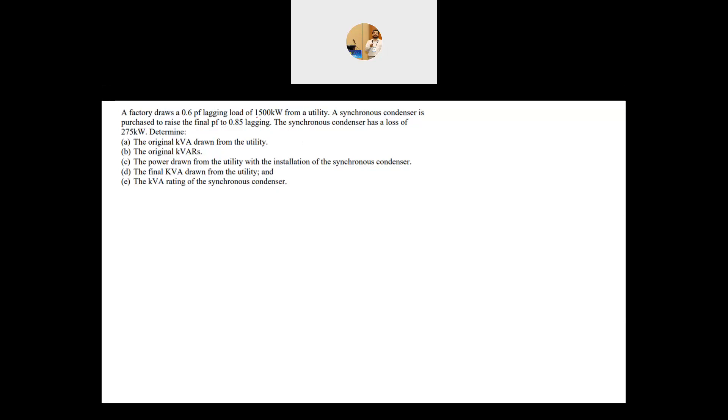So here we have a factory that draws 0.6 power factor lagging load of 1500 kilowatt from utility. So this is a three-phase system here and we have here the factory. This factory is basically using 1500 kilowatt and the power factor is 0.6 lagging. So the factory is connected to this three-phase line that we don't even know the voltage, the line-to-line voltage, because it's not easy in this question.